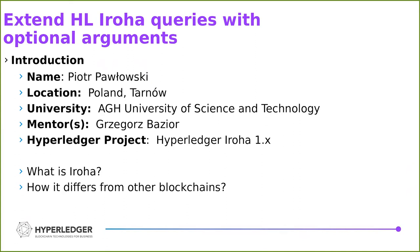My project was to extend Hyperledger IROHA queries with optional arguments. My mentor was Mr. Grzegorz Bazior and we used Hyperledger IROHA 1.2. IROHA is an open source blockchain from the Hyperledger Greenhouse. It differs because it uses no native cryptocurrency and it's a permissioned blockchain, so you have to have the necessary permissions to join it or to access some data.